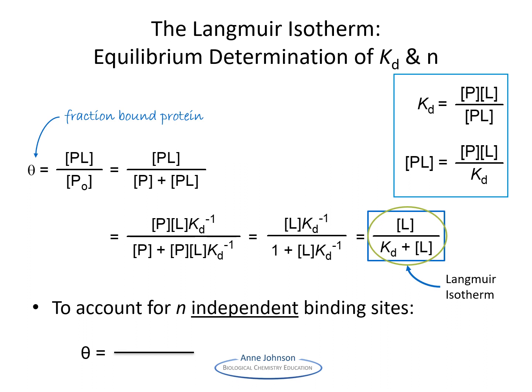What happens if there are more than one independent binding site? We can accommodate this with N in the expression. There is an assumption here that these independent binding sites have the same affinity for the ligand.